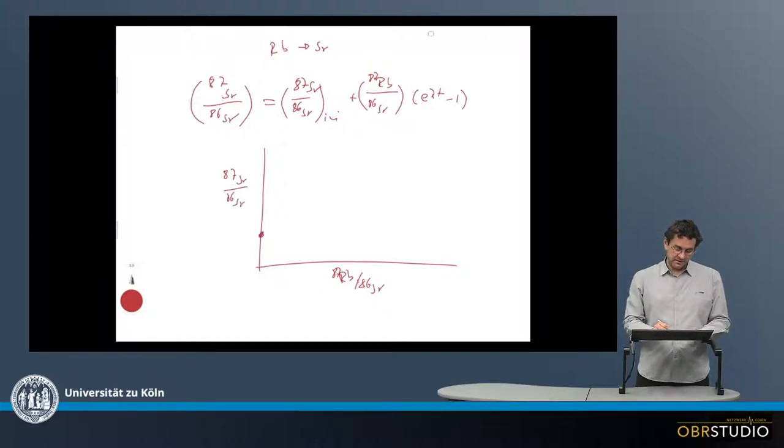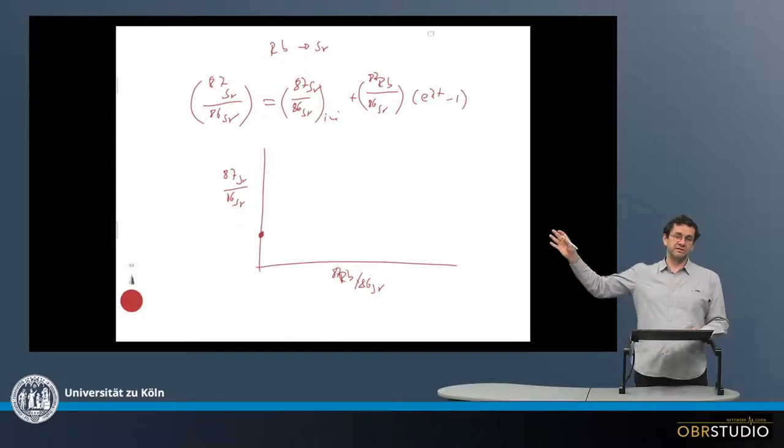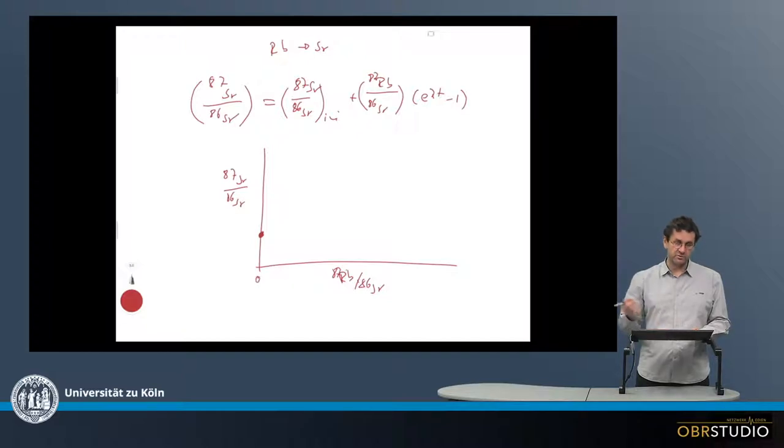And then there is here, basically this is the initial value. Because if there is no rubidium, so this is zero here, which means there is no rubidium, this point stays the same.